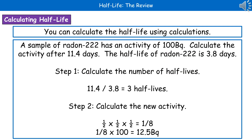The other way you can calculate half-life is by doing some calculations. An example of this type of question: a sample of radon-222 has an activity of 100 Becquerels. Calculate the activity after 11.4 days. The half-life of radon-222 is 3.8 days. So the first thing we need to do is work out how many half-lives are going to be experienced over the duration. We do 11.4 divided by 3.8, which tells us there are 3 half-lives.